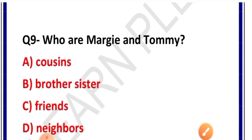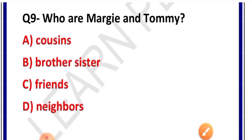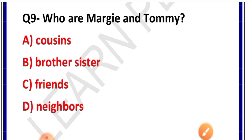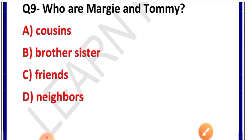Question number 9: Who are Margi and Tommy? Options: cousins, brother-sister, friends, neighbors. Correct answer is option D — neighbors. They are neighbors. Woh padosi hain.